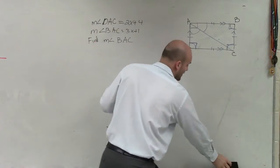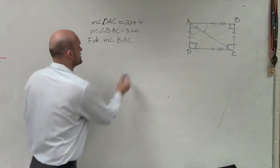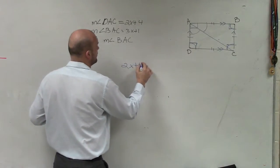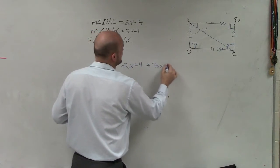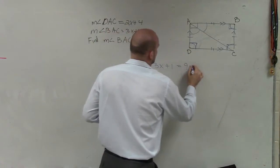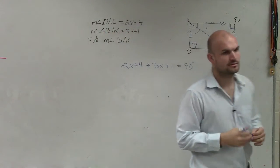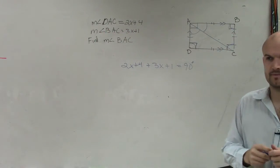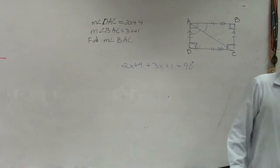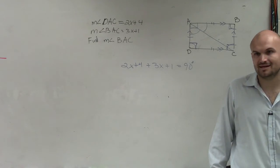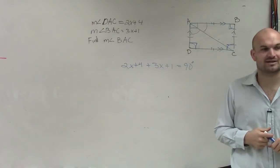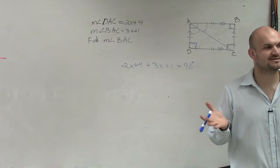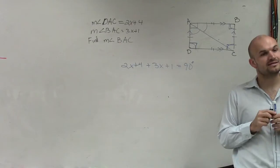So I can write an equation for that. So I can say 2x plus 4 plus 3x plus 1 equals 90 degrees. Right? Because they're what we call complementary. Because adding up to 180 is supplementary. There we go. OK. Yes?